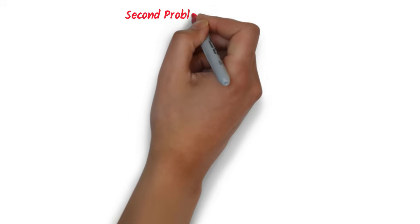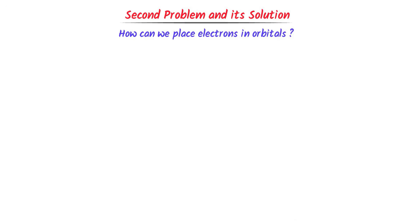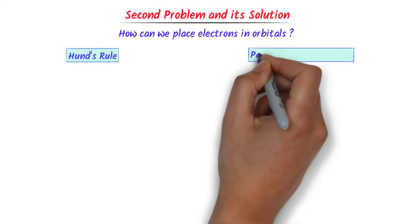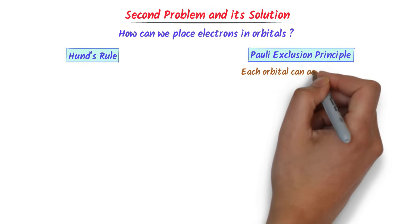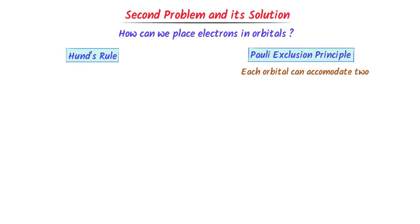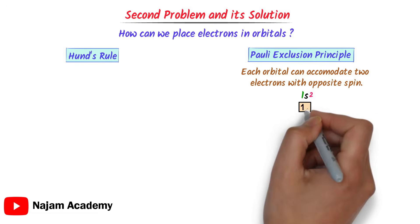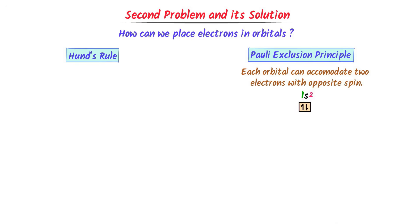Now we will discuss how to place electrons in orbitals. To solve this problem, we use Hund's rule and the Pauli exclusion principle. The Pauli exclusion principle states that each orbital of a subshell can accommodate 2 electrons with opposite spin. For example, one orbital will accommodate 2 electrons but the spin of the electrons must be opposite.